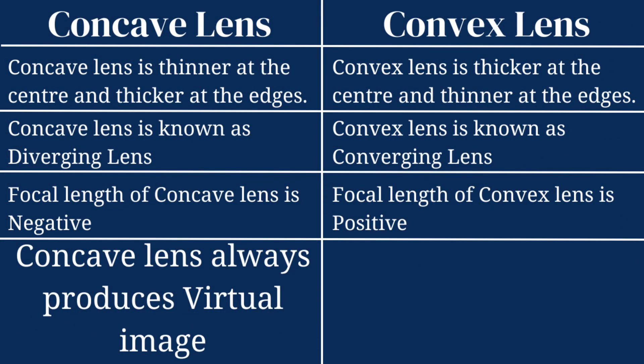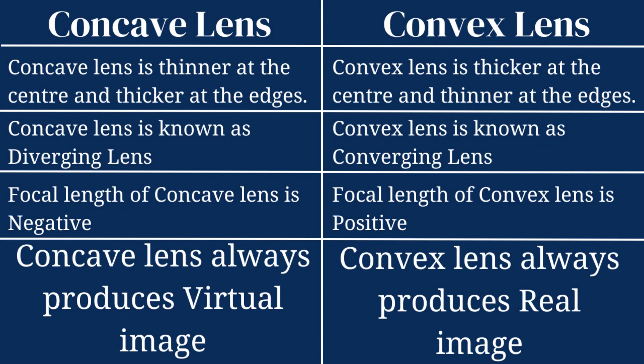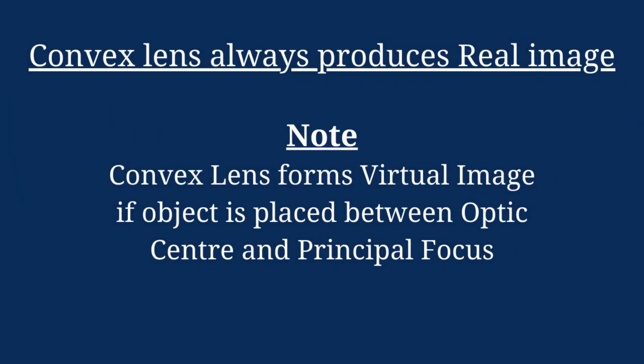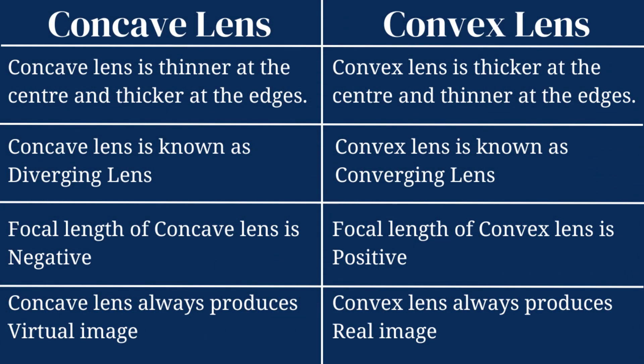Concave lens always produces a virtual image, while convex lens produces a real image. However, if the object is placed between the optic center and the principal focus, the convex lens produces a virtual image. This is the only case when the convex lens produces a virtual image; in all other cases it always produces a real image.